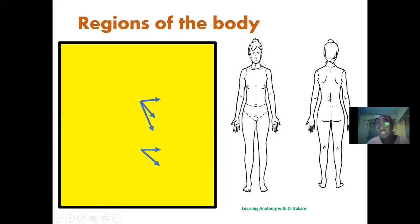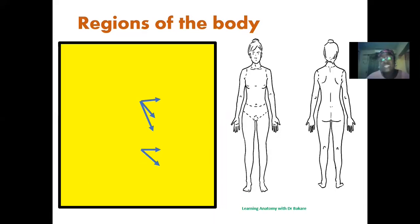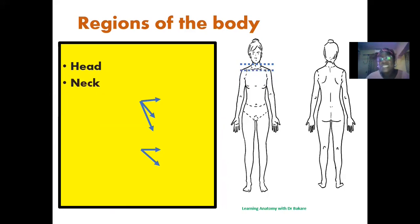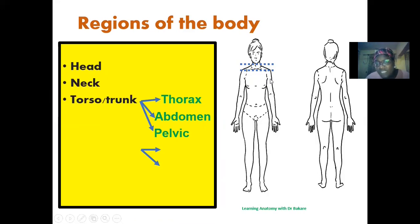We have different regions of the human body. The first is the head region, connected by the constriction called the neck. Below the neck, the structure is the torso or the trunk. When we remove the upper limb and the lower limb, the structure remaining is the trunk. The trunk is further subdivided, with the thorax as the most superior part.